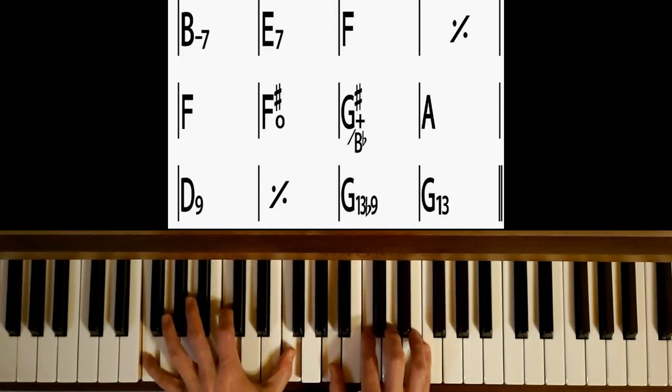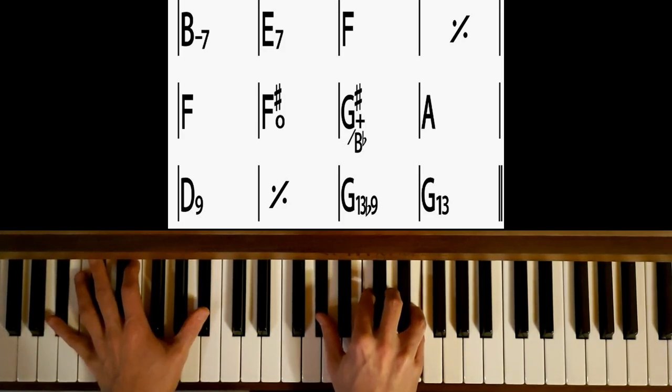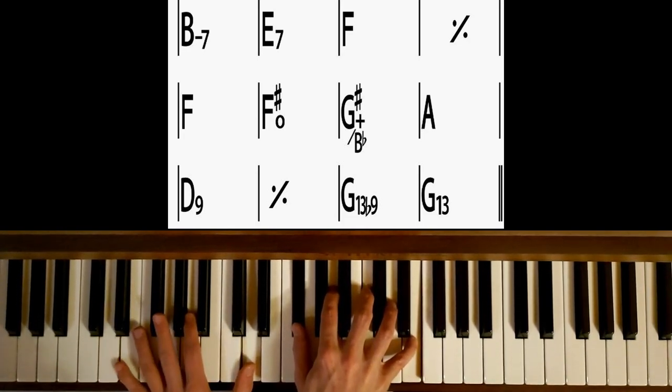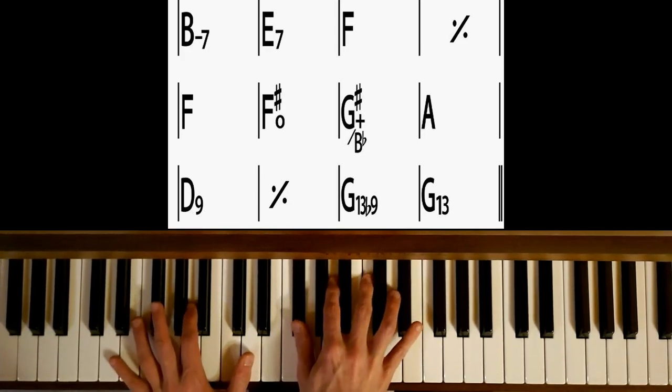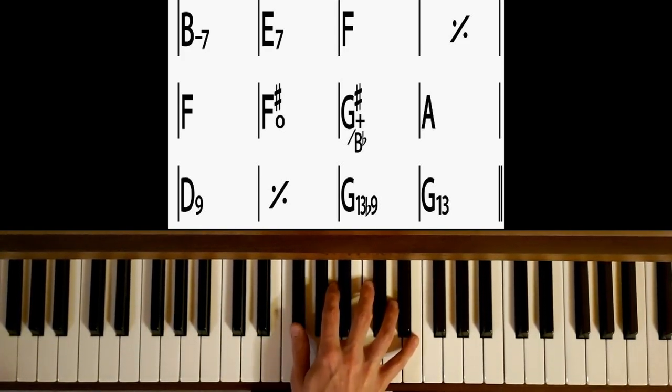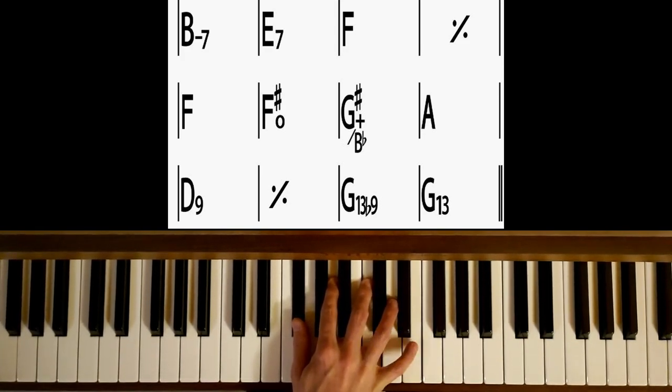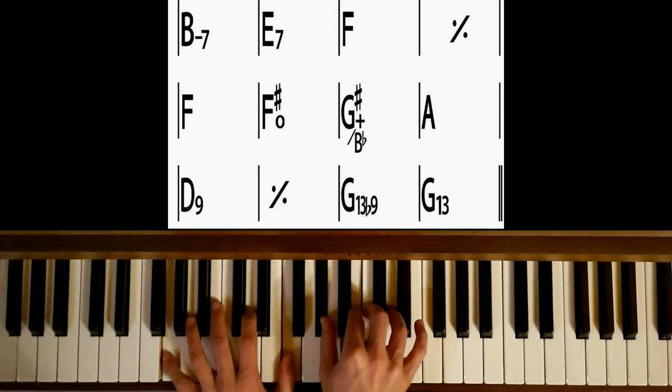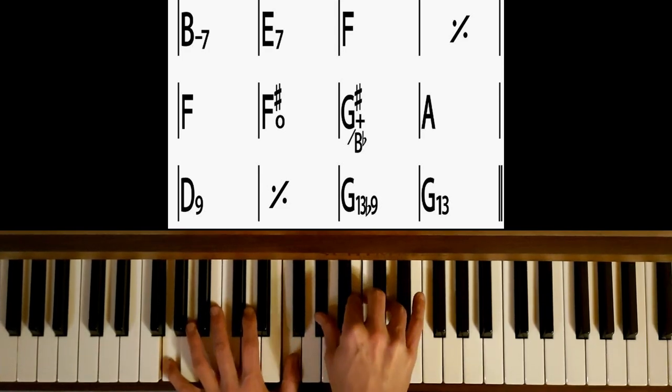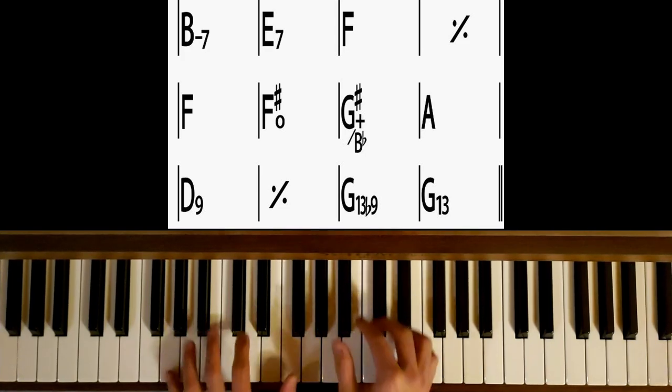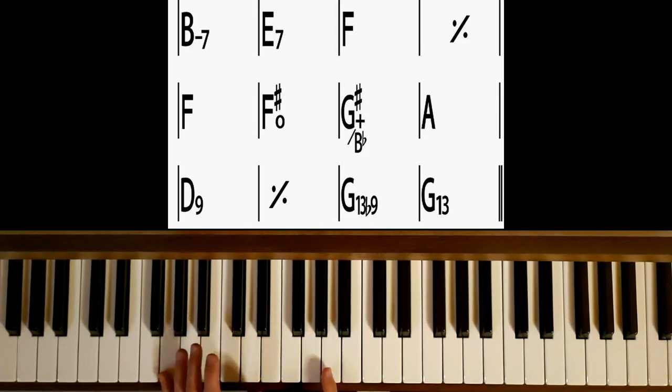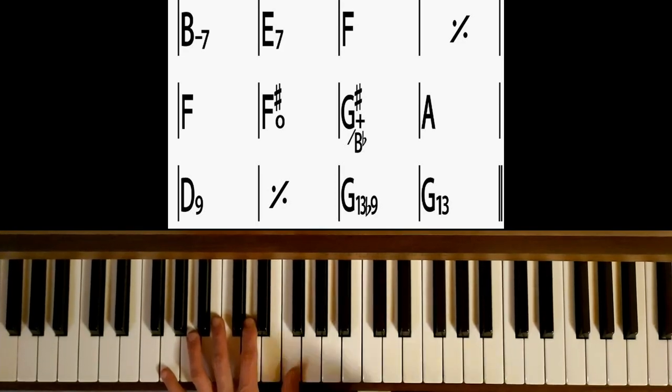Donc si je refais la montée. Donc là on a bien un joli Ré septième 9, même Ré septième 9. La neuvième de Ré c'est Mi, comme toujours c'est toujours un ton au-dessus mais de l'octave du dessus. Et puis là on peut toujours rajouter, faire ce Sol avec une neuvième diminuée. Donc la neuvième de Sol celle-là, neuvième diminuée. La bémol.